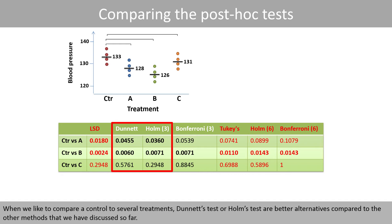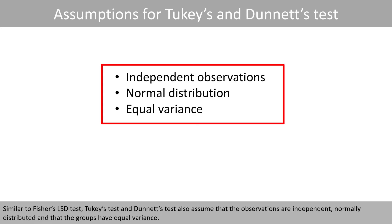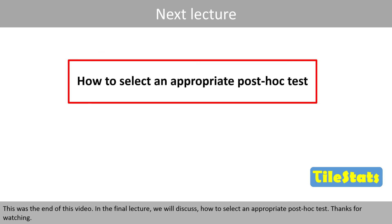When comparing a control to several treatments, Dunnett's test or Holm's test are better alternatives compared to the other methods discussed. Similar to Fischer's LSD test, Tukey's test and Dunnett's test also assume that the observations are independent, normally distributed, and that the groups have equal variance. This was the end of this video. In the final lecture, we'll discuss how to select an appropriate post-hoc test. Thanks for watching!